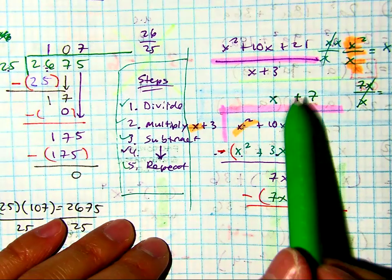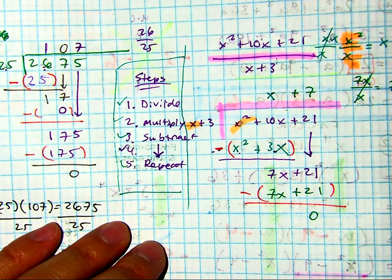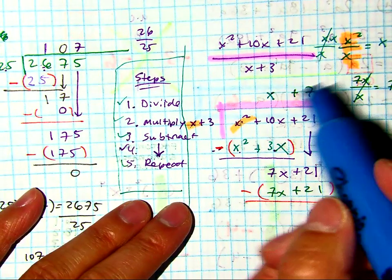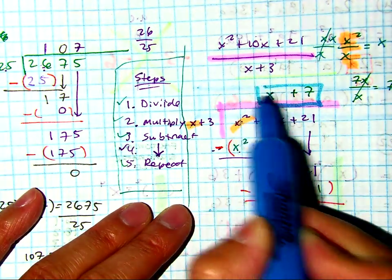My quotient is x plus 7. So this is the answer. When you divide these two polynomials, your answer is x plus 7.